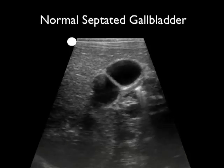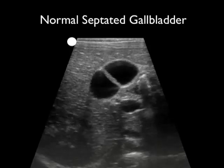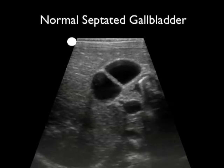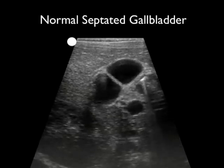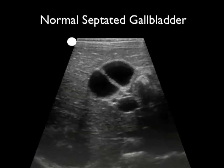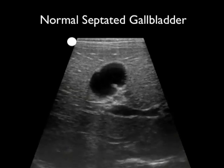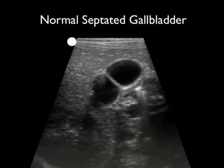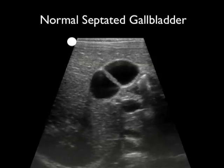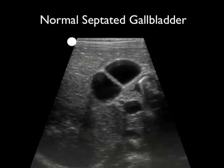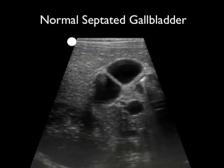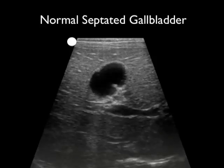Here's a normal variant known as a septated gallbladder. We see a little septum — that little white line — going through the middle of the gallbladder. This can be seen on bedside sonography and is not to be mistaken as pathology.